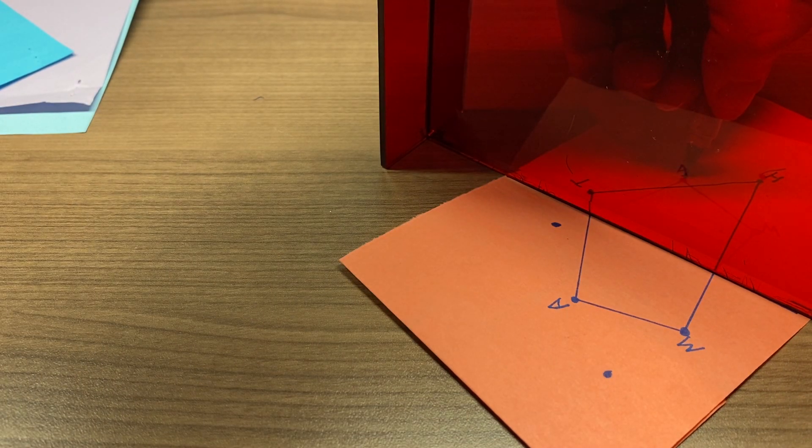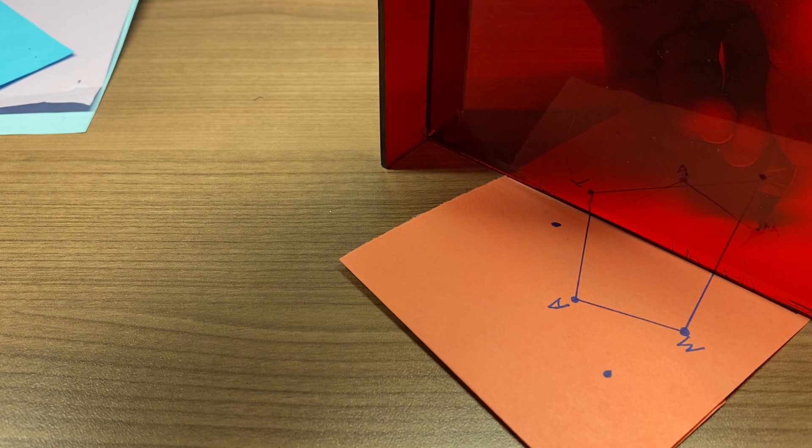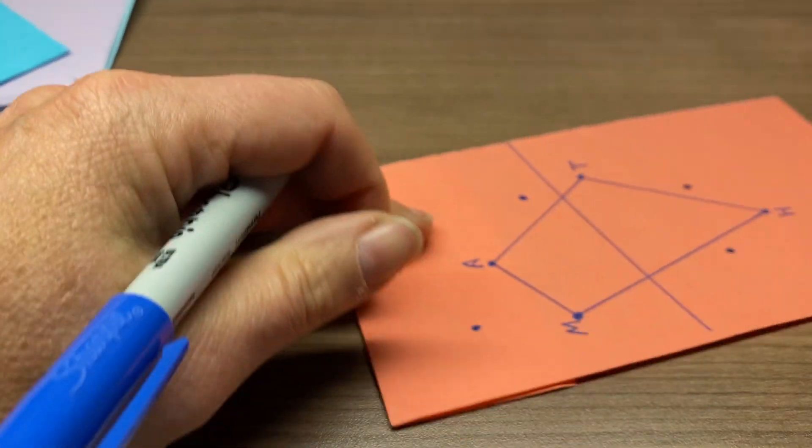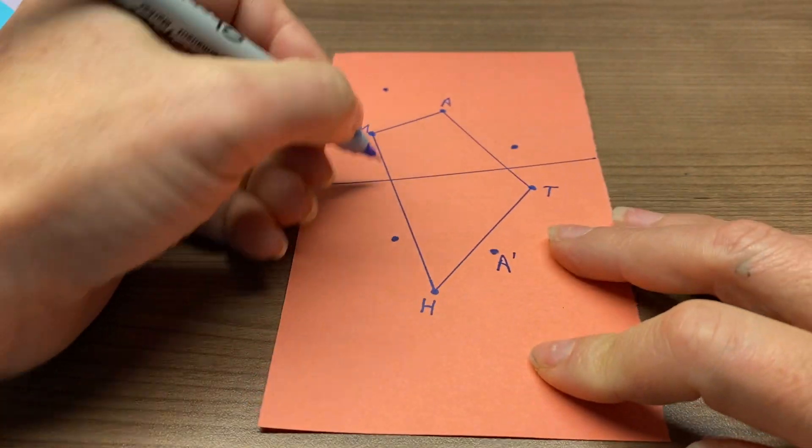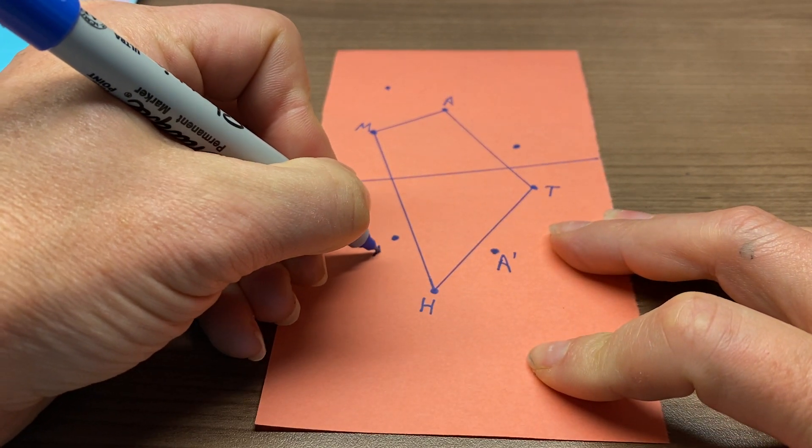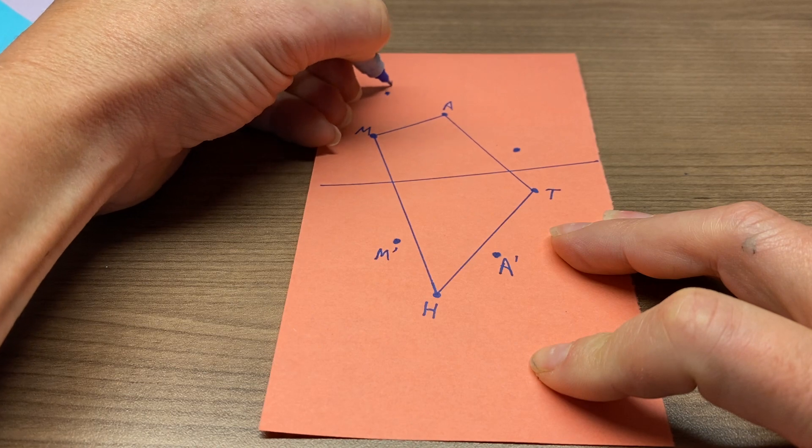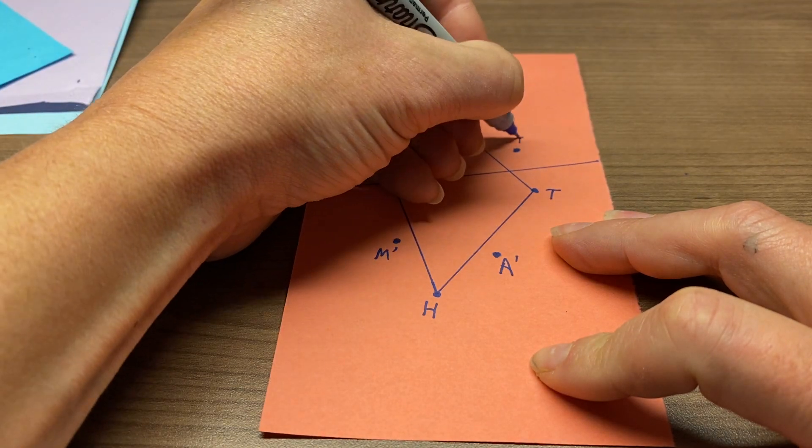In this case, two. All right, so here is our A' and our M' and we've got H' and we've got T'.